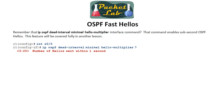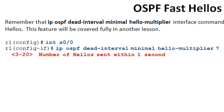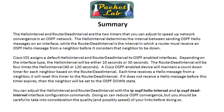OSPF fast hellos use the ip ospf dead-interval minimal hello-multiplier argument — not the ip ospf hello-interval command. This sets the dead interval to one second and lets you specify the number of hellos to send within that second, enabling sub-second OSPF hellos. This is a pretty cool feature tied directly into the dead interval and hello interval. There will be a separate lesson covering this in detail.